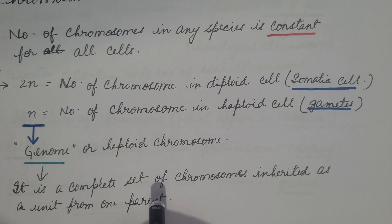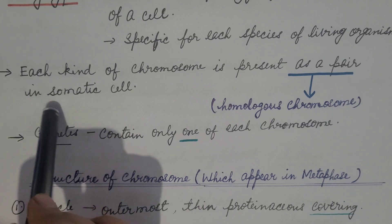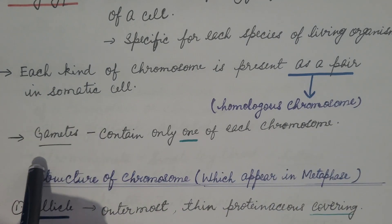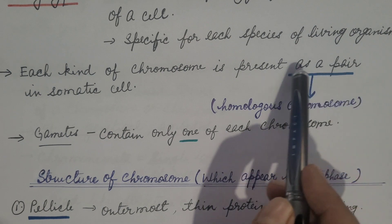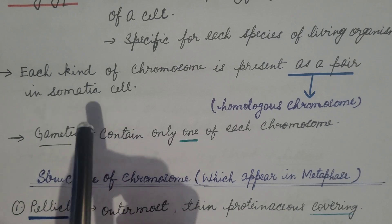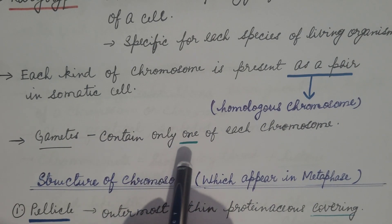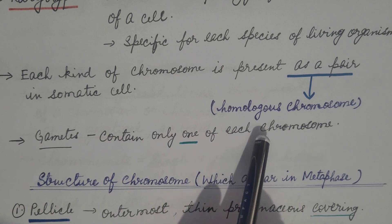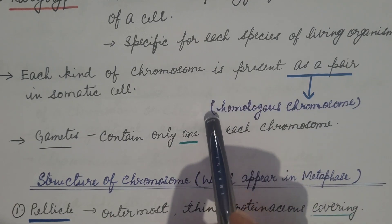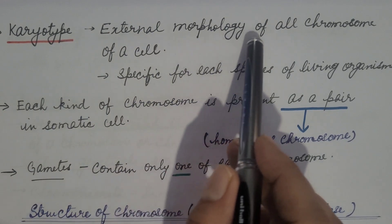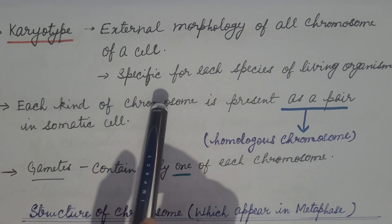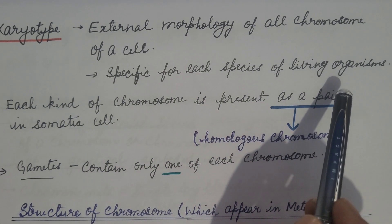During sexual reproduction, one set of chromosomes comes from the paternal side and one from the maternal side; after fusion, the diploid number is restored. In somatic cells, each kind of chromosome is present as a pair — known as homologous chromosomes. Gametes contain only one of each chromosome. The study of the external morphology of all chromosomes of a cell is known as karyotype, which is specific for each species. This will be discussed in detail in a separate video.